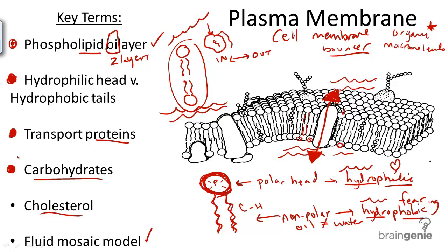Carbohydrates are chains of simple sugars that flag other cells. They serve as a major point of intercellular communication — talking with other cells so that they can work together.